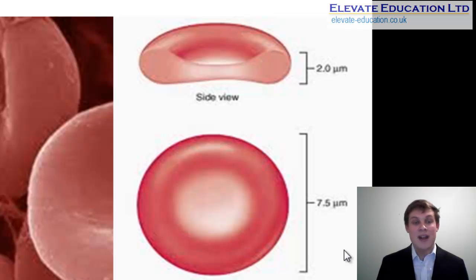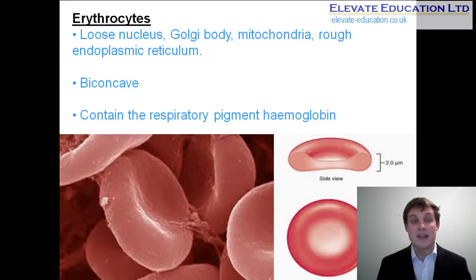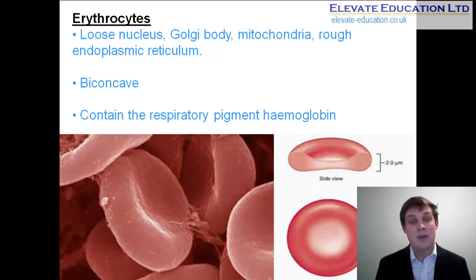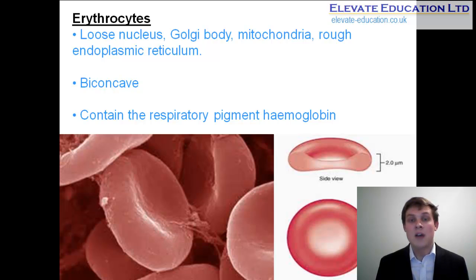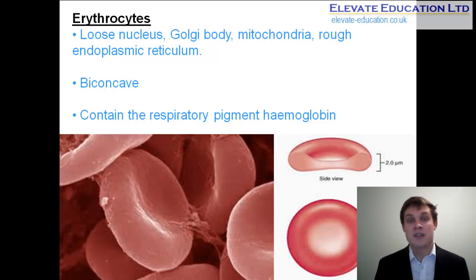The biconcave shape gives the cell a very high surface area to volume ratio, meaning that red blood cells present an extremely good gas exchange surface — able to quickly and effectively take up and lose gases both in the lungs and the body tissues. Besides having lost the cellular organelles, erythrocytes contain large amounts of a respiratory pigment called hemoglobin, which allows the red blood cells to take up oxygen in much higher concentrations and much more quickly. So both the shape and the presence of hemoglobin mean that erythrocytes are ideally suited to transport oxygen around the body.